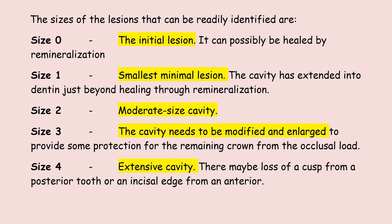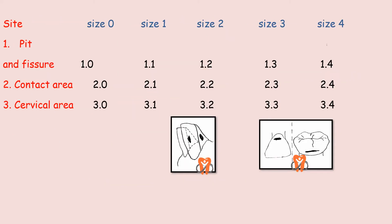The different sizes of lesions are: Size 0 — initial lesion that can be healed by remineralization; Size 1 — smallest cavity just extended into dentine, cannot be healed by remineralization; Size 2 — moderate size cavity; Size 3 — cavity needing modification and enlargement with proper cavity cutting; Size 4 — extensive cavity with possible loss of cusp or incisal edge.